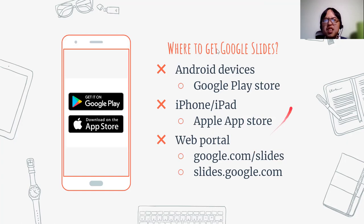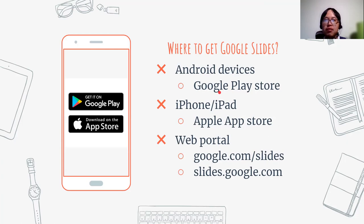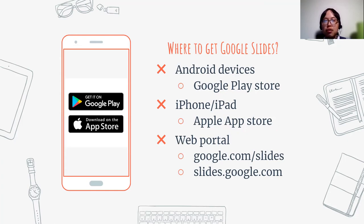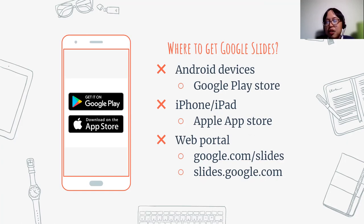To use Google Slides on an Android device, go to the Google Play Store, type in Google Slides, and download the app. For iPhone or iPad, go to the Apple App Store and download the app. To use Google Slides on your computer — desktop or laptop — go to your browser, locate the address bar, and type in google.com/slides or slides.google.com. There are multiple ways to get there, but the easiest is typing one of those addresses directly into your browser.